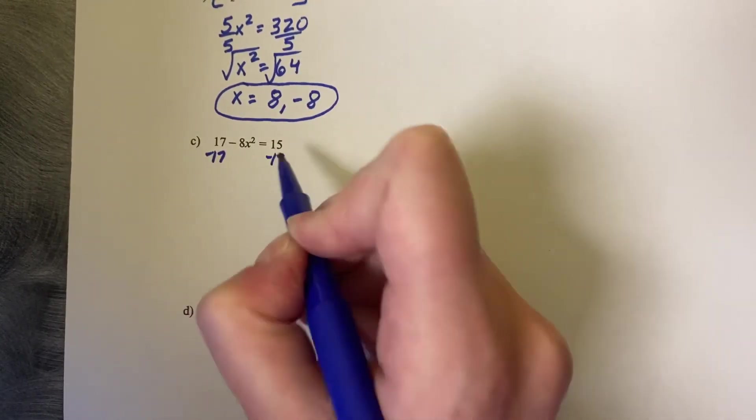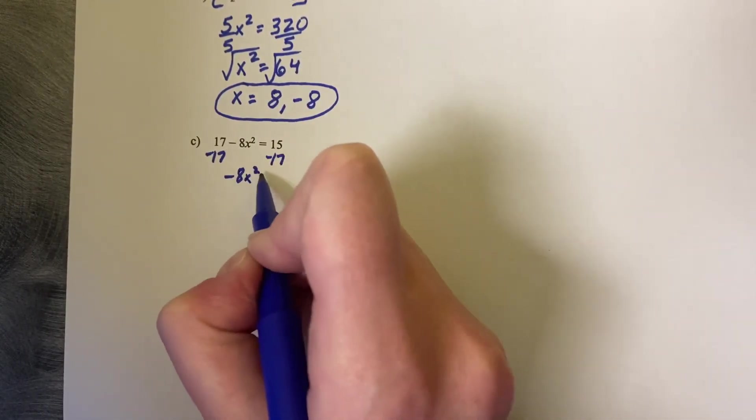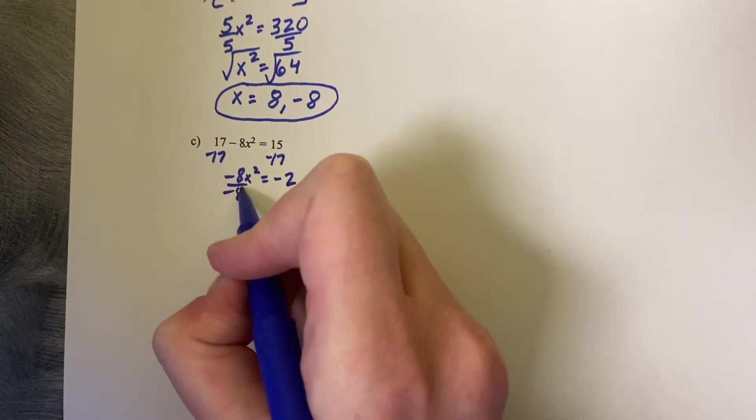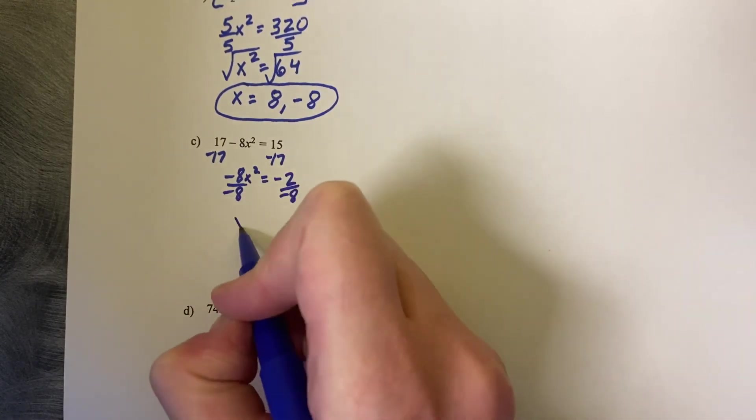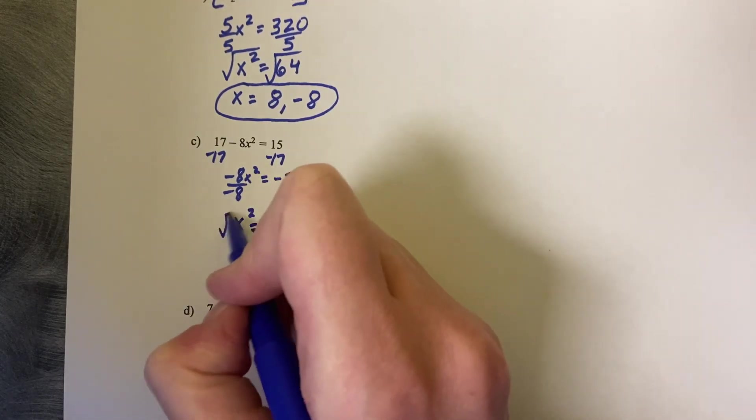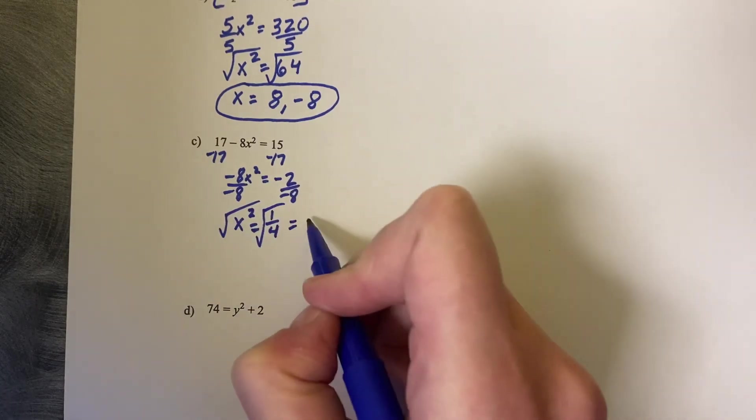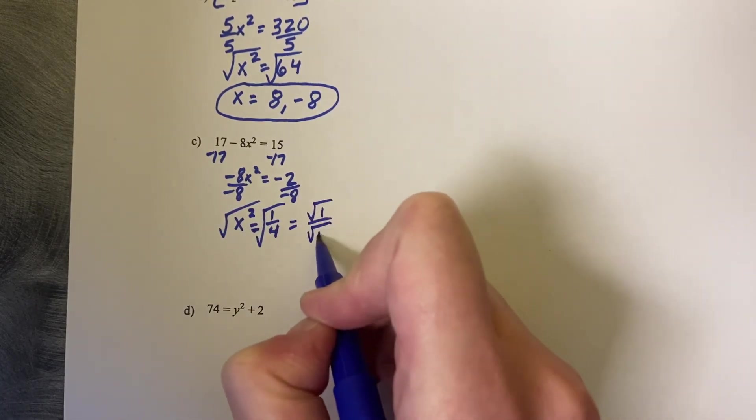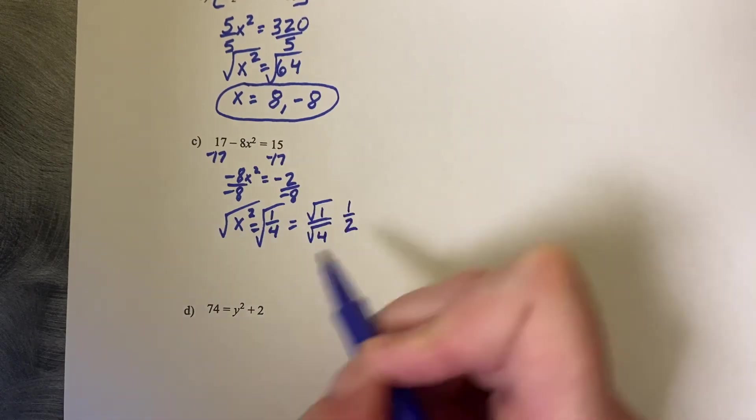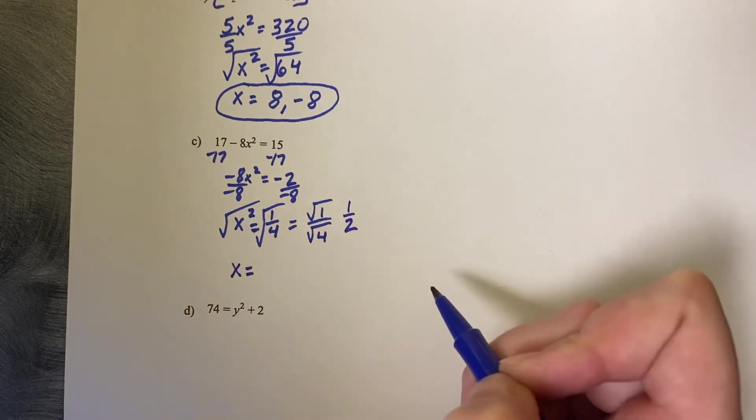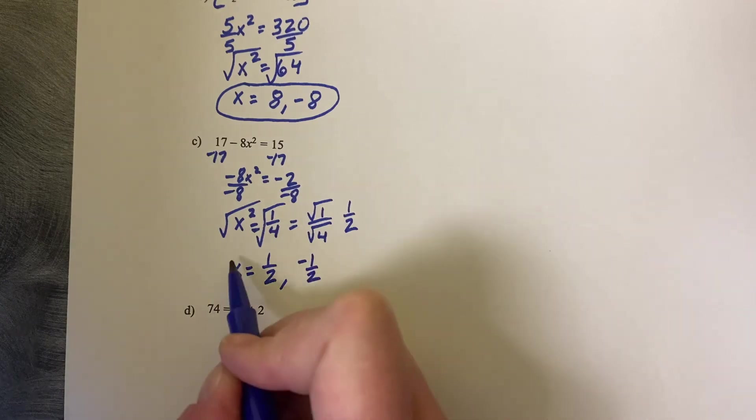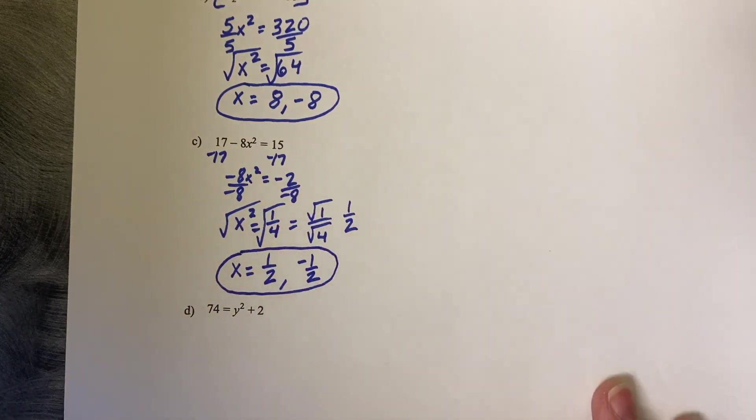Alright, minus 17. Negative 8 squared equals negative 2. Divide by negative 8. So then we get x squared equals 1 fourth. And then when you take the square root of both sides here, you can split this into the square root of 1 over the square root of 4. So then that makes it 1 over 2. But recall that you still have both solutions. So it's 1 half and negative 1 half. Two solutions. Still need two solutions.